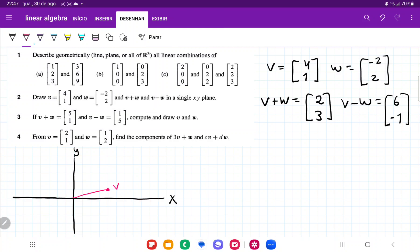Okay, let's draw w, so w is going to be -2 in the x and 2 in the y, so that is going to be my w.